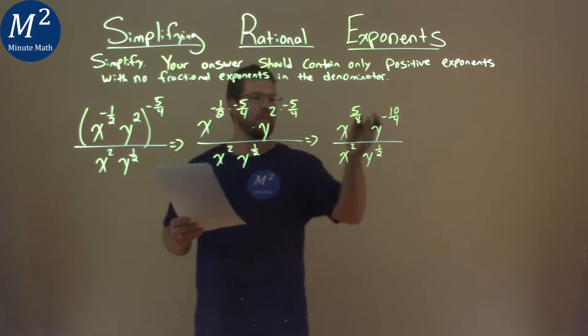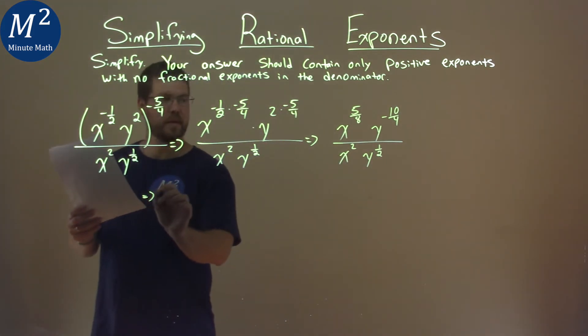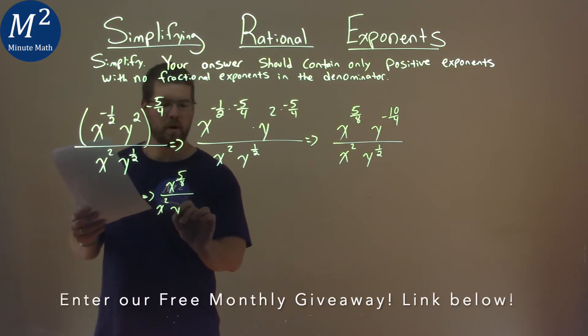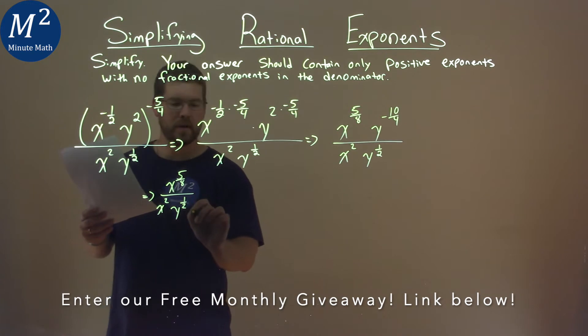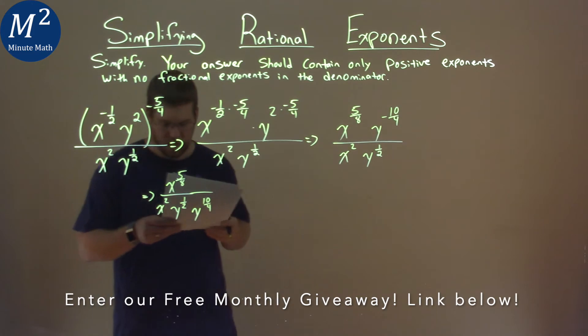Now from there, I'm going to bring my negative exponent down to the denominator. So to do that, put it right here, we have x to the five-eighths power, over x squared, y to the one-half power, and we're bringing down that y to the now positive ten-fourths power, but it's in the denominator.